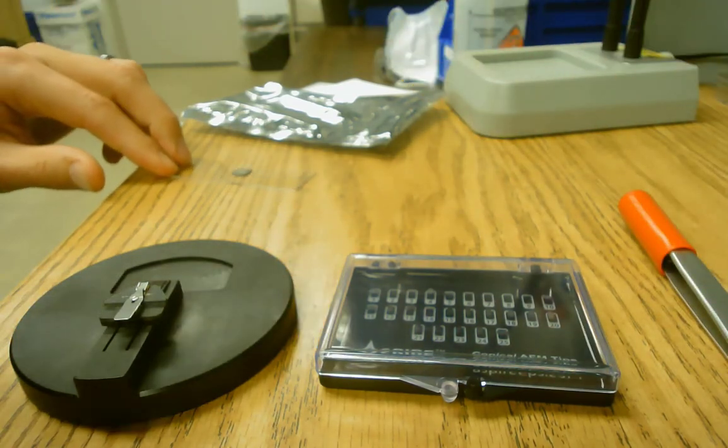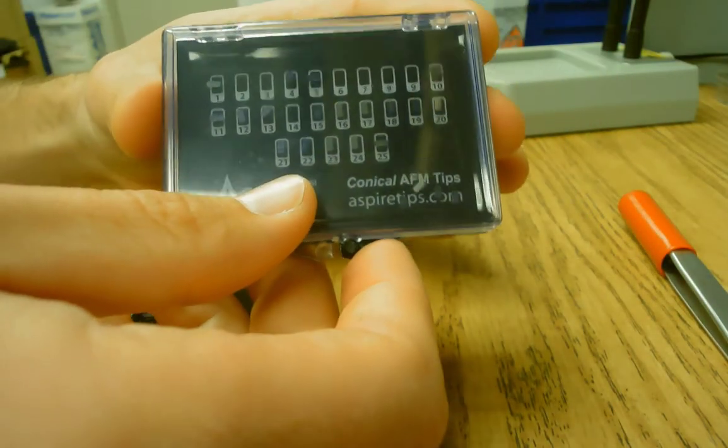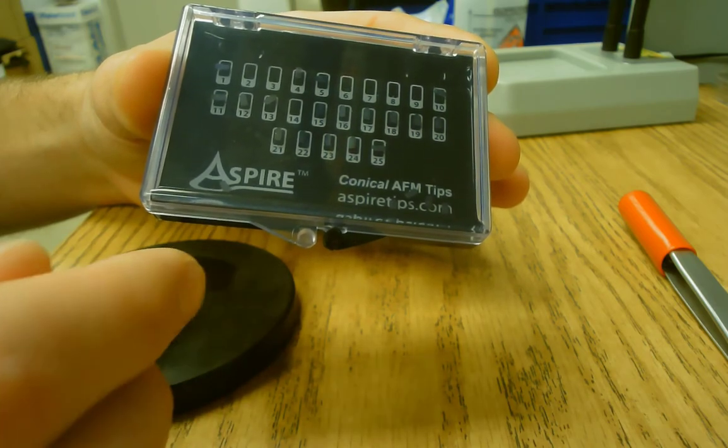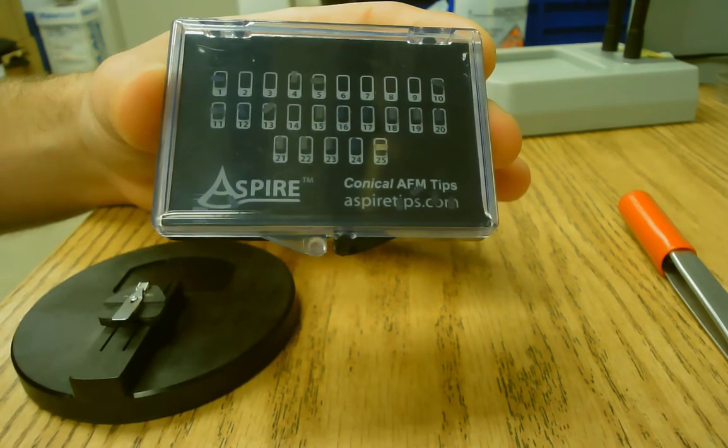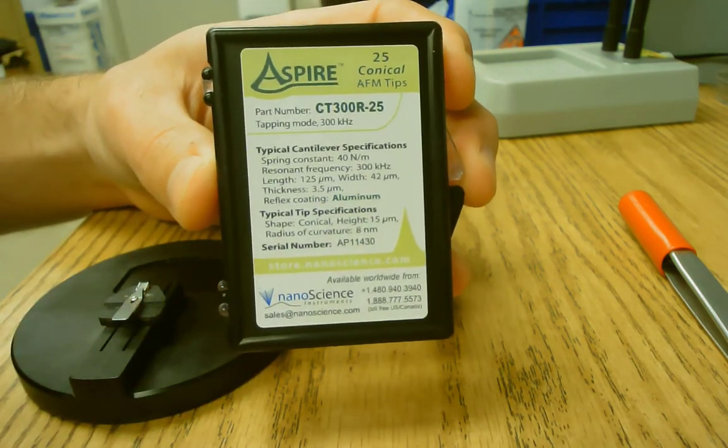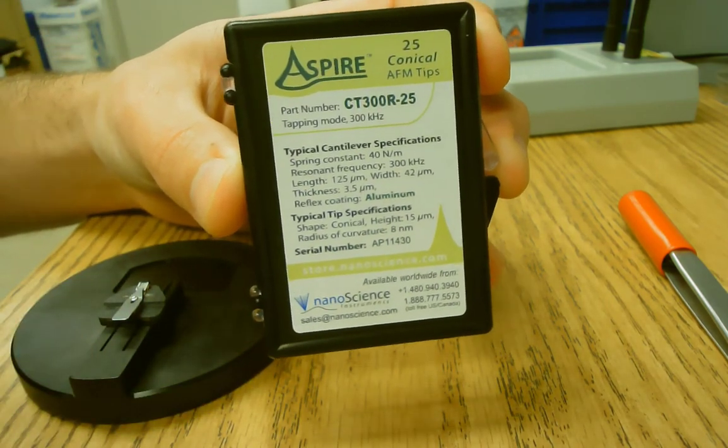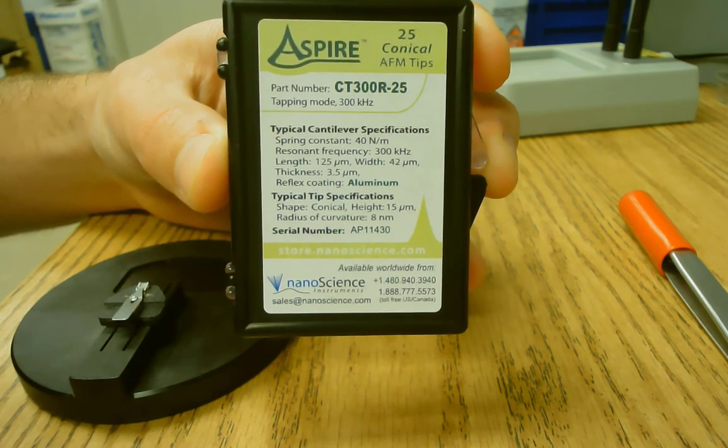And then we have our tips. So the tips usually come in a box similar to this. They can look slightly different. But these are specifically tapping mode tips made by Aspire.